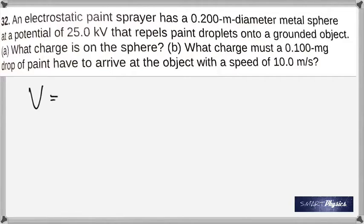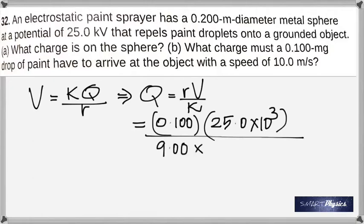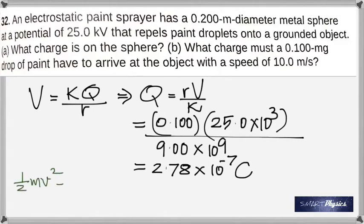Now, the charge on the sphere is just assumed to be the charge concentrated at its center. Although the charges are spread out on the sphere, you imagine that all of that charge is right at the center. Then you can use k times q divided by the radius to find the potential of the sphere. Rearrange to make charge the subject. The radius is 0.1, the potential difference is 25 times 10 to the 3, and k is 9 times 10 to the 9. When you calculate that, you get 2.78 times 10 to the negative 7 coulombs.